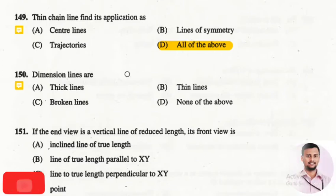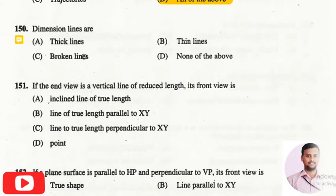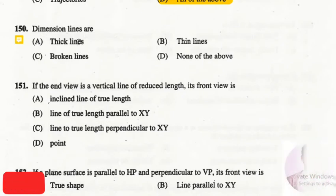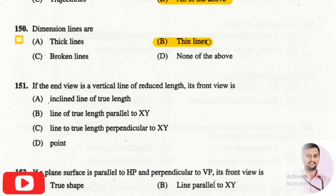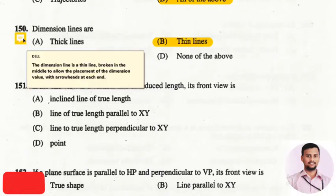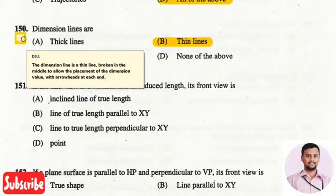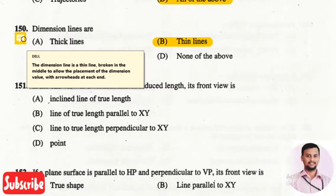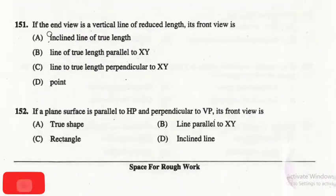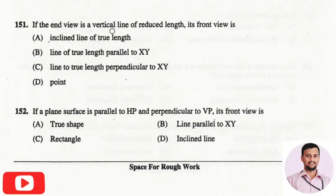The thin chain line is used for center lines, trajectory lines, and lines of symmetry, so the right answer is all of the above. The next question is: the dimension lines are? The right answer is option two, that is thin lines. Dimension lines are thin lines broken in the middle to allow placement of a dimension value, and both ends are headed with arrowheads.